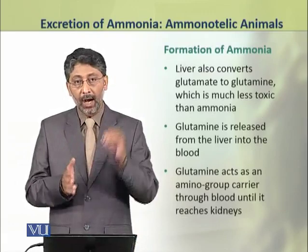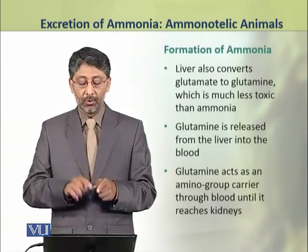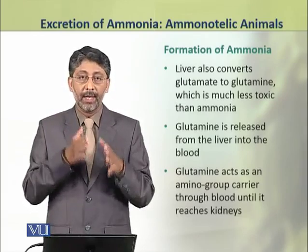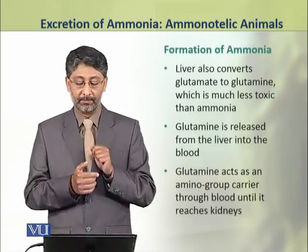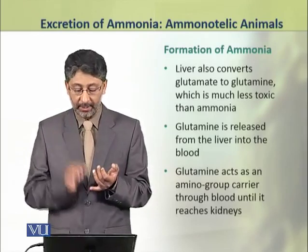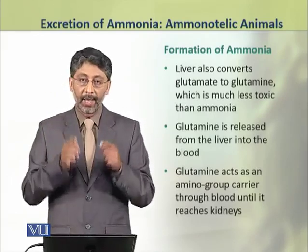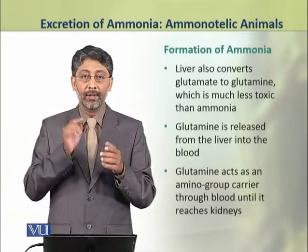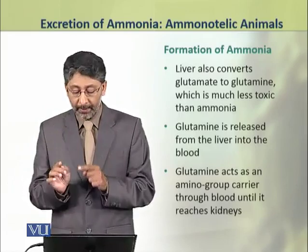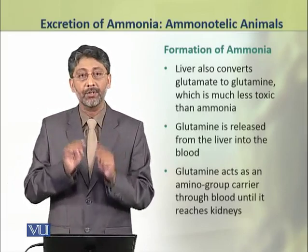The liver also converts glutamate to glutamine, which is much less toxic than ammonia. Glutamine is released from the liver into the blood and acts as an amino group carrier through the blood and tissues until it reaches the kidneys.